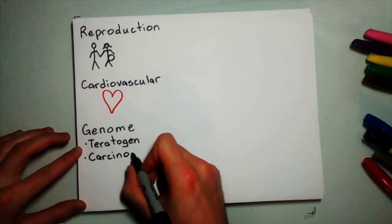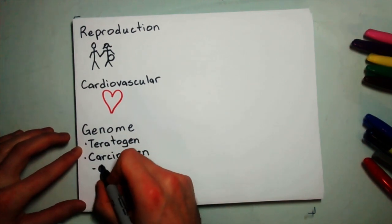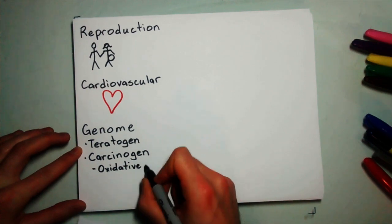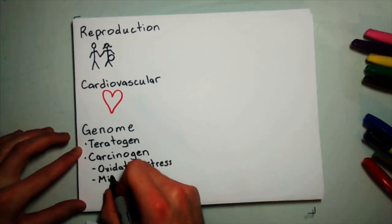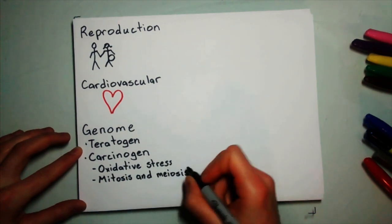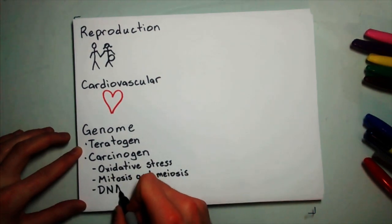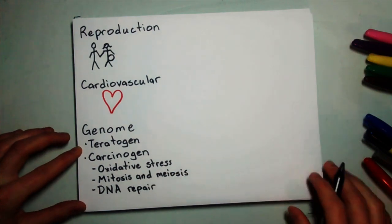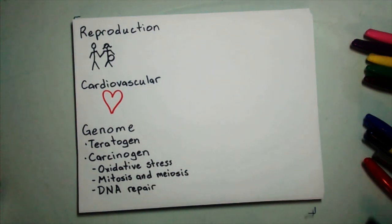As a teratogen, it can cause congenital disorders, and as a carcinogen, it can cause tumors. Mercury causes oxidative stress, leading to free radical formation and subsequent cell damage. Mercury also affects microtubule function, interfering with mitosis and meiosis. It also interferes with DNA repair mechanisms.